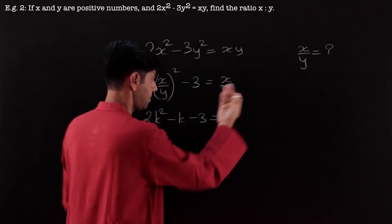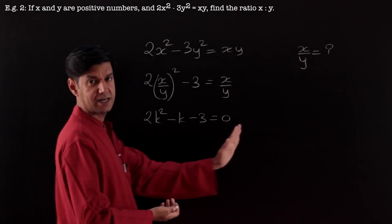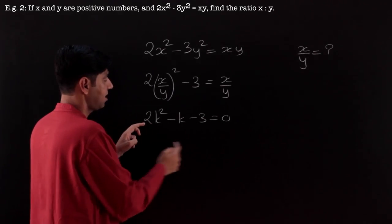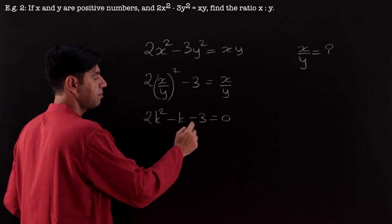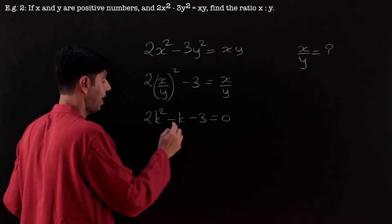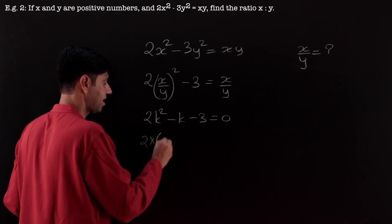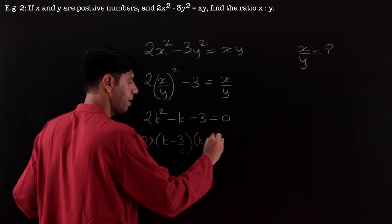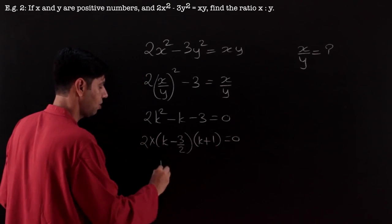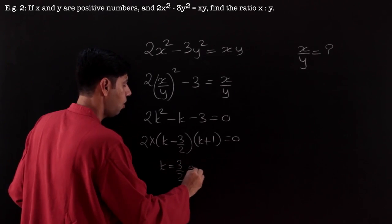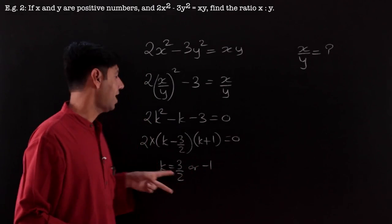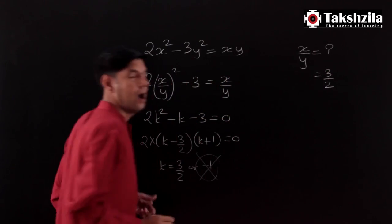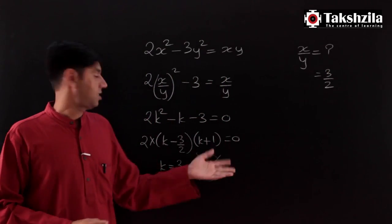To factorize 2k² − k − 3 = 0: we need two numbers whose product is 6 and difference is 1, which are 3 and 2. The factorized form gives k = 3/2 or k = −1. Since x and y are positive numbers, we reject the negative value, and the ratio x to y is 3 to 2. Try factorizing it yourself to confirm the answer.